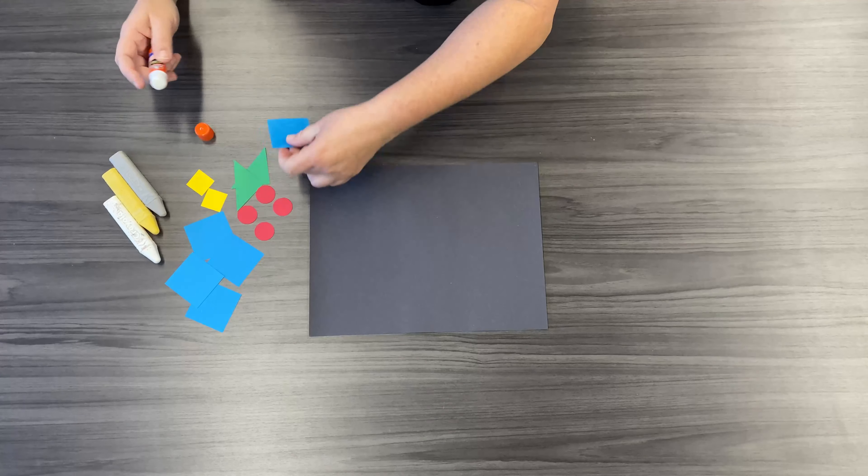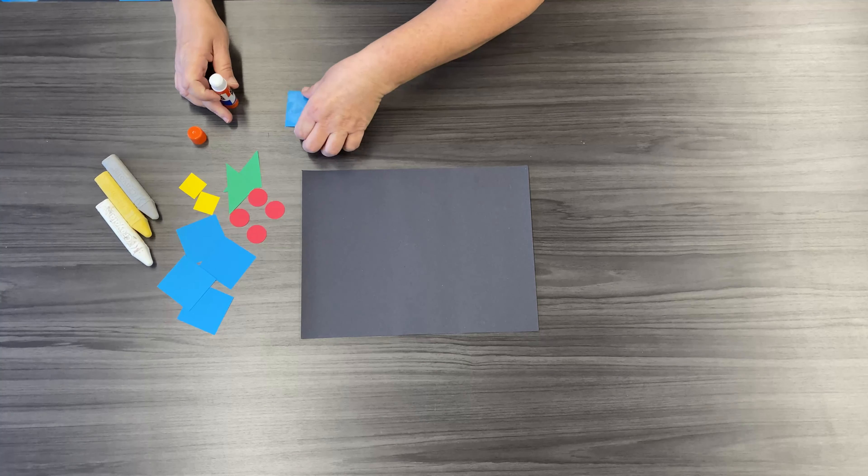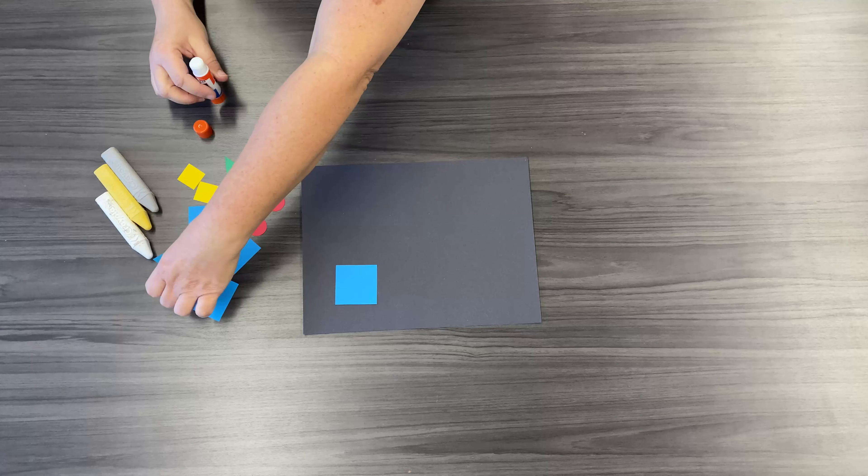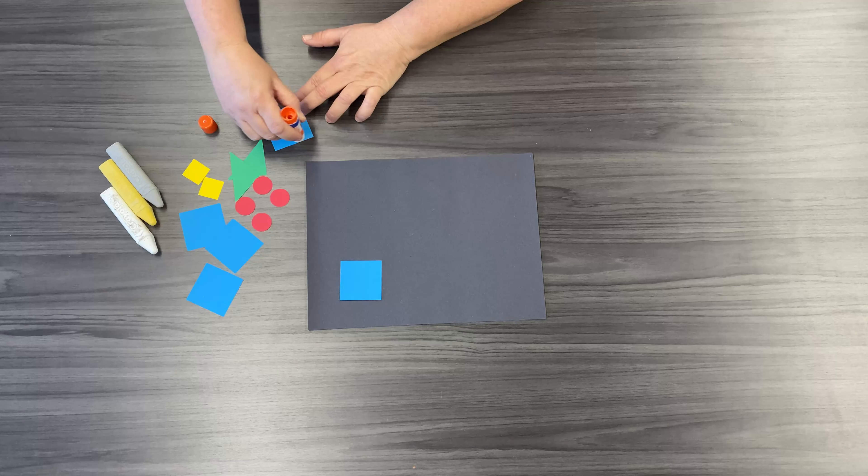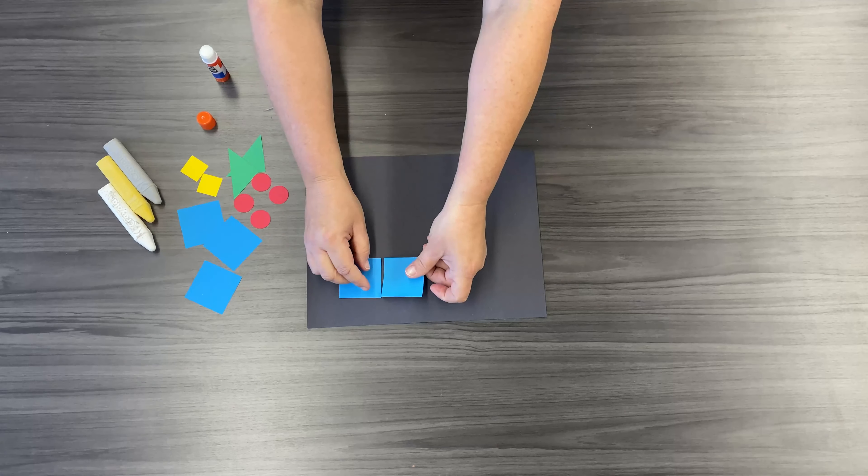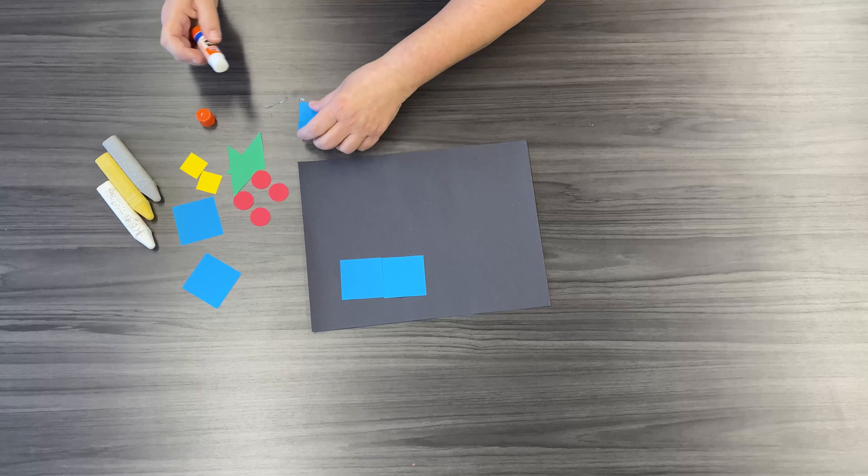So all you want to do, start gluing on those shapes like that. And then just start lining them up so it looks like a train.